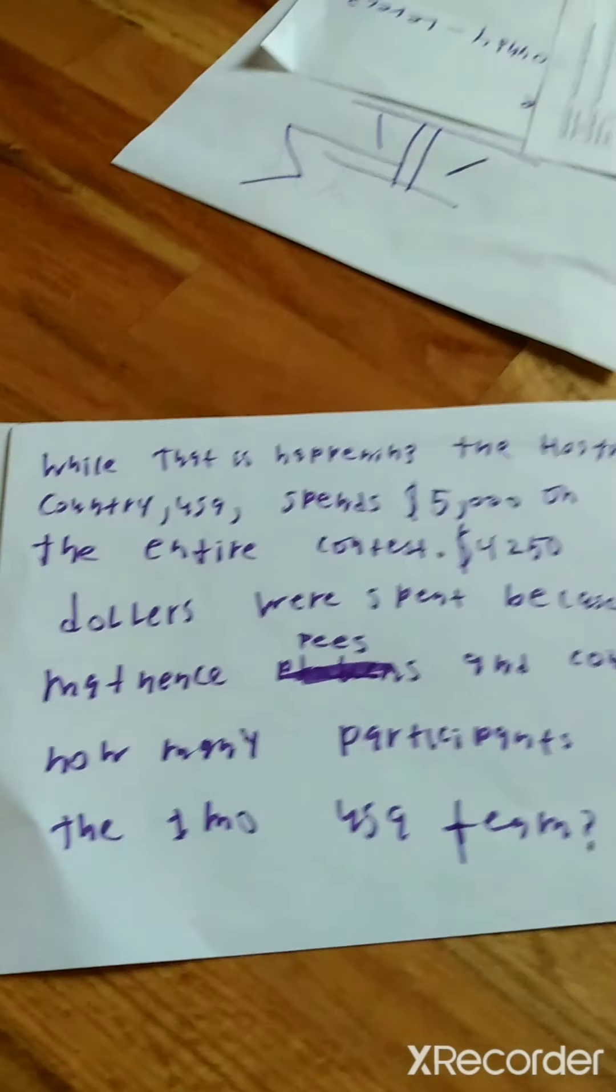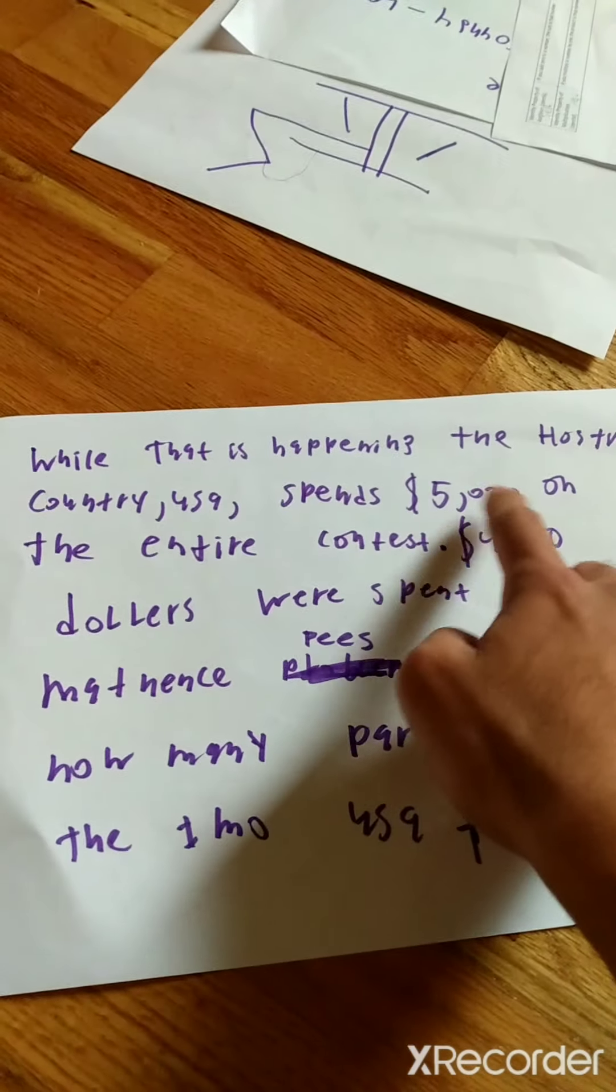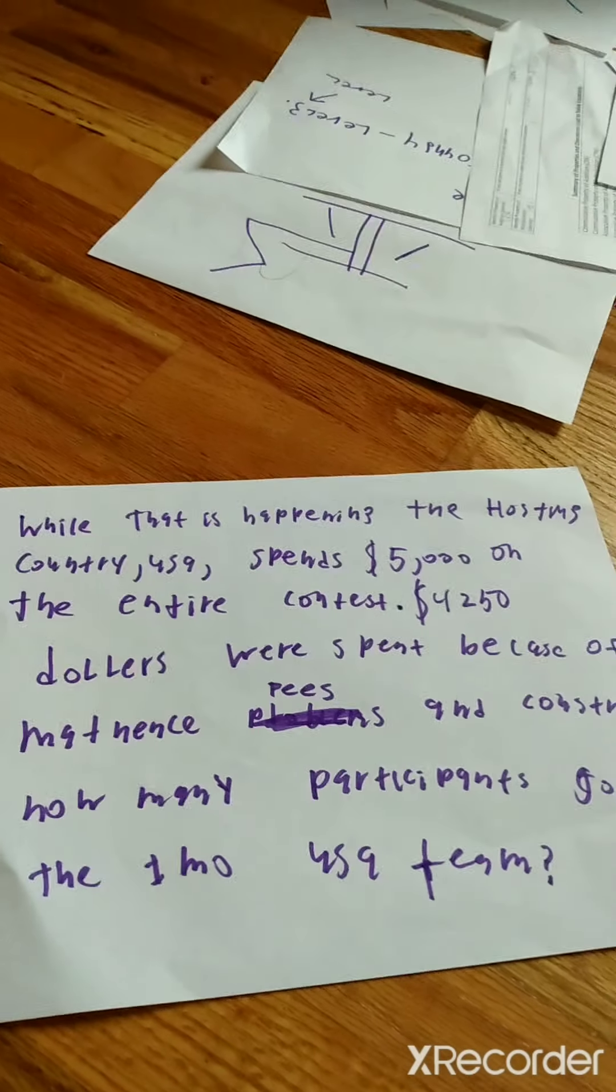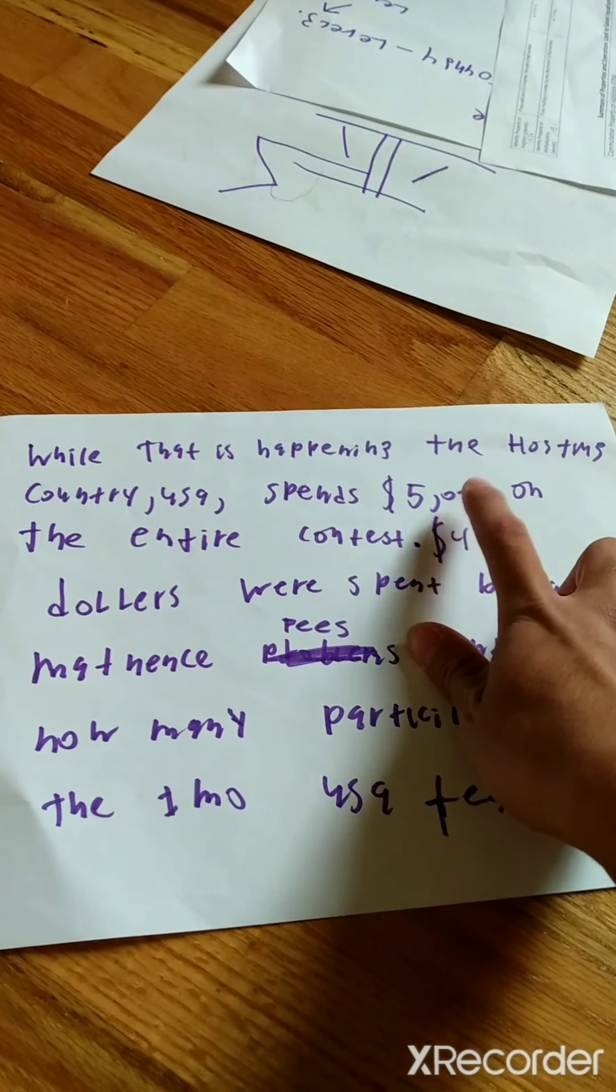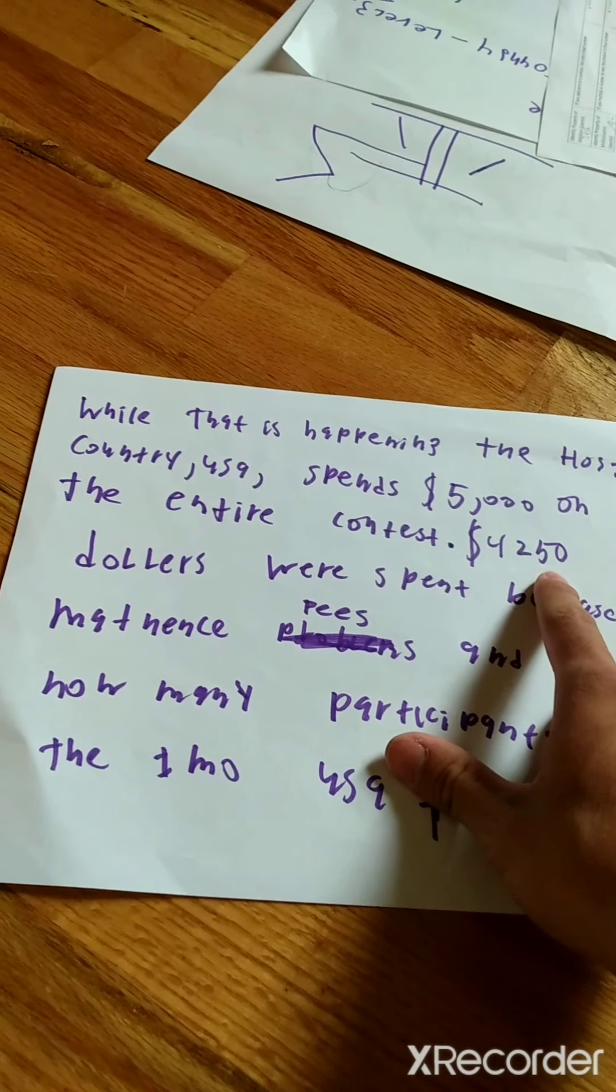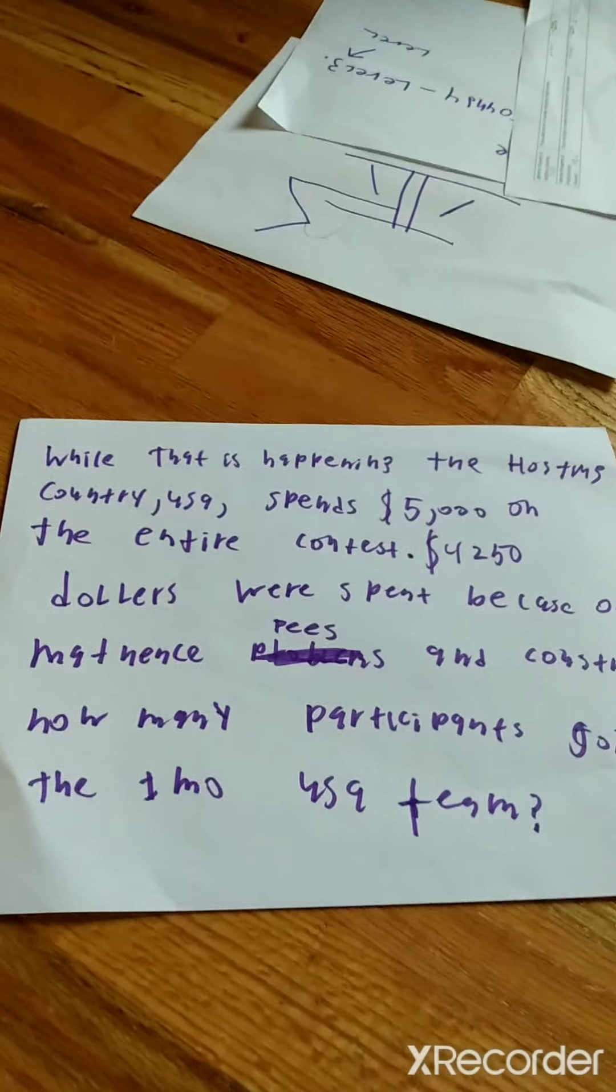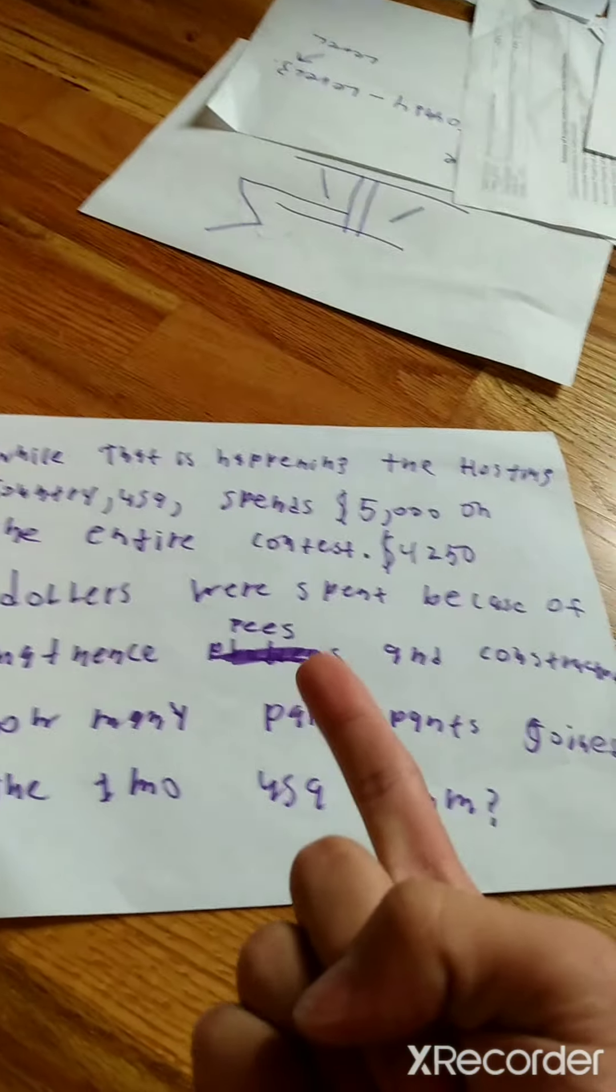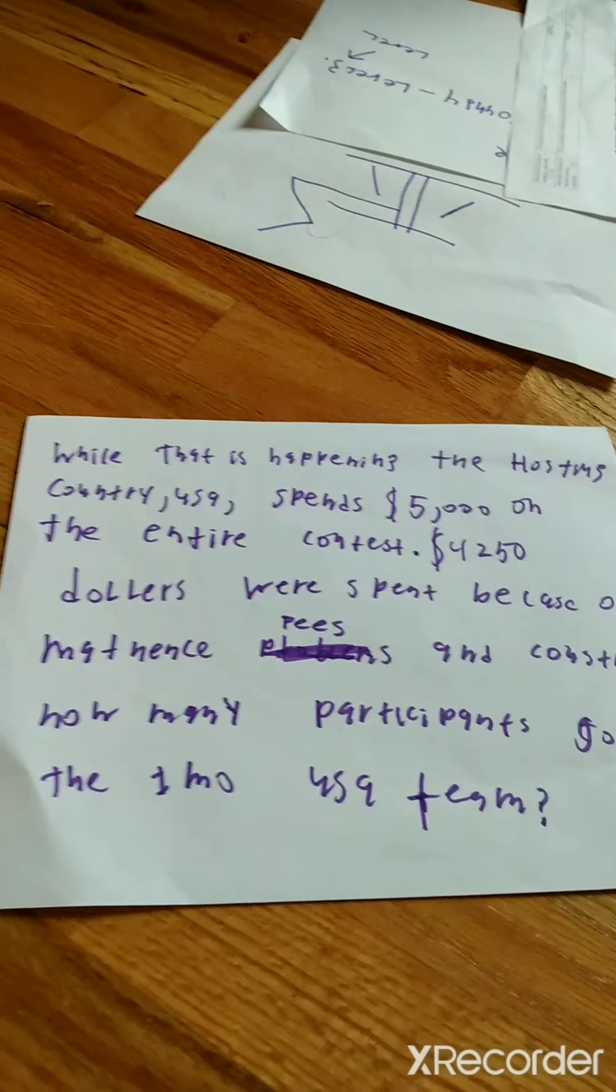While that is all happening, the hosting country, the USA, spends $5,000 on the entire contest. So pretty much when a country is hosting the IMO, they actually have to spend a minimum total of $5,000. That's for the hosting country. $4,250 of those dollars were spent on maintenance fees and construction. So before the IMO, they have to spend money on building the setup, building the stage, getting the cameras ready, constructing the TV screens, and getting anything else ready.